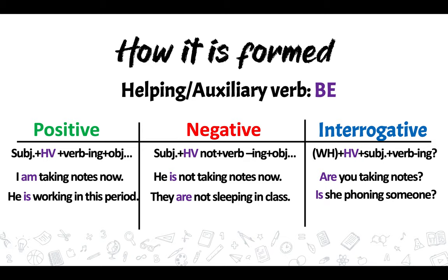We need the verb to be plus a main verb with -ING at the end. For a positive sentence, the formula is: subject + helping verb (verb to be) + verb-ING + object + time expression. For example: I am taking notes right now. He's working in this period.